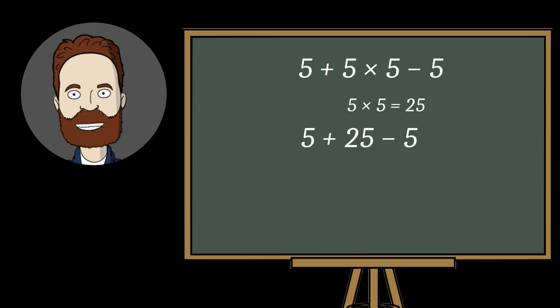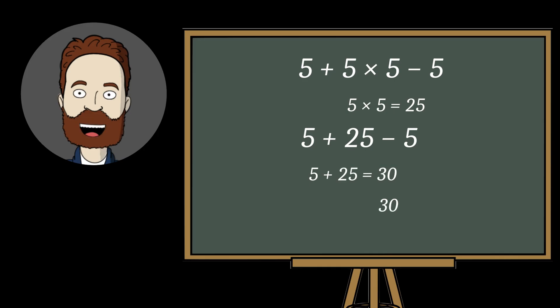Next, we add and subtract from left to right. 5 plus 25 equals 30. 30 minus 5 equals 25. This is our correct answer.